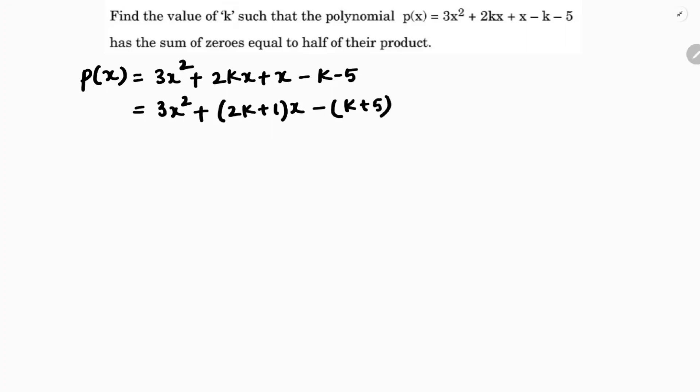Comparing this with the standard form ax² + bx + c, we have a = 3, b = 2k+1, and c = -(k+5).